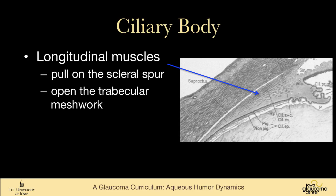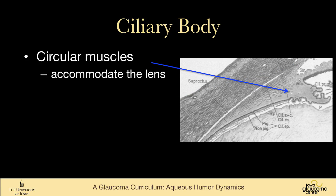The ciliary body is made up of multiple structures. There are the longitudinal muscles that pull on the scleral spur, and that opens up the trabecular meshwork to increase aqueous outflow. The circular muscles of the ciliary body accommodate the lens, and that's why when we give cholinergic agonists such as pilocarpine to lower intraocular pressure by pulling on the scleral spur, we also cause the eye to accommodate, which is really not what we want.